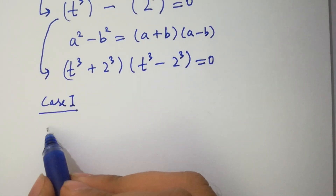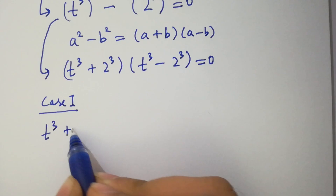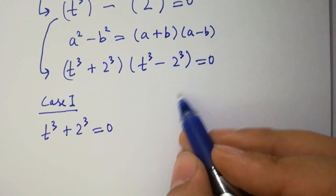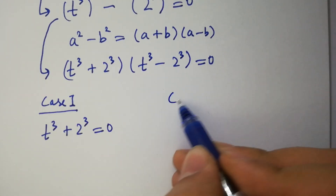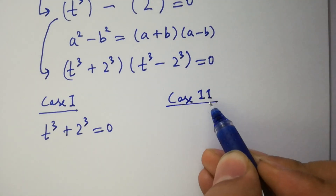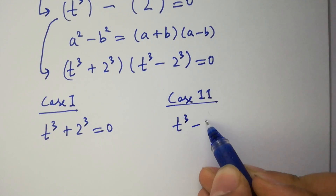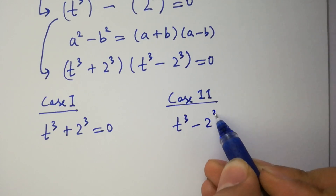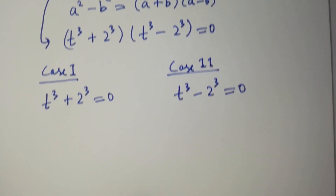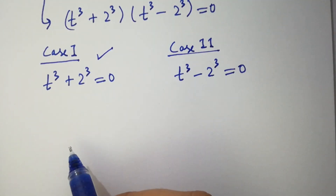Case 1: t cubed plus 2 cubed equal to 0. And the second case is t cubed minus 2 cubed equal to 0. First of all, I am going to solve Case 1.